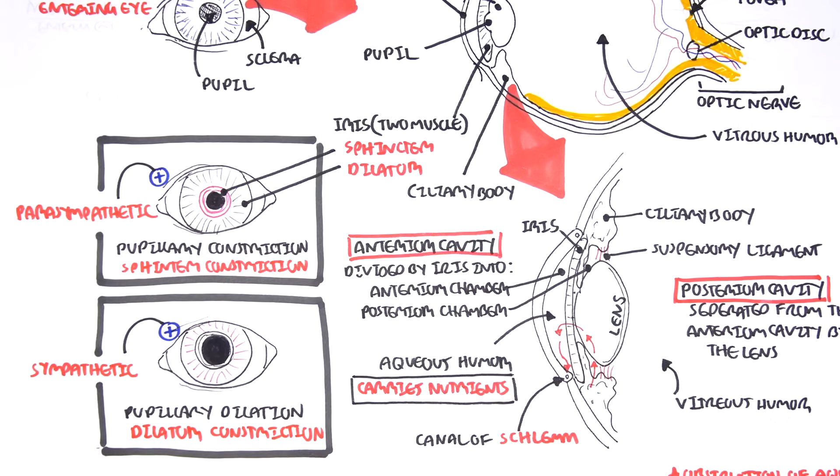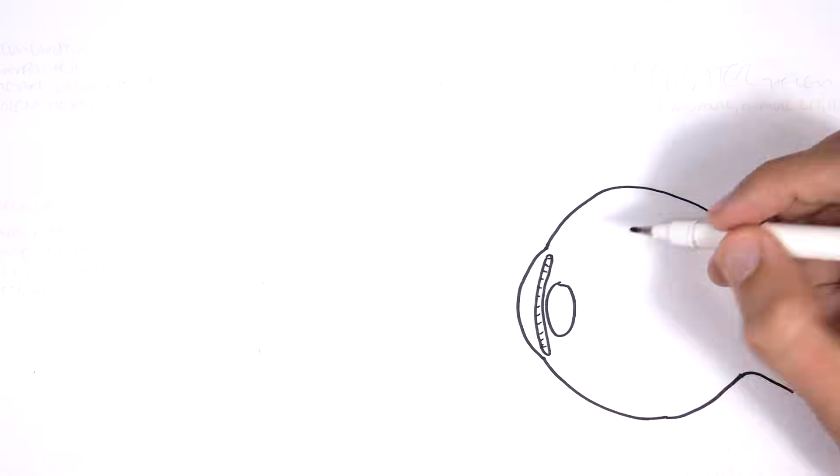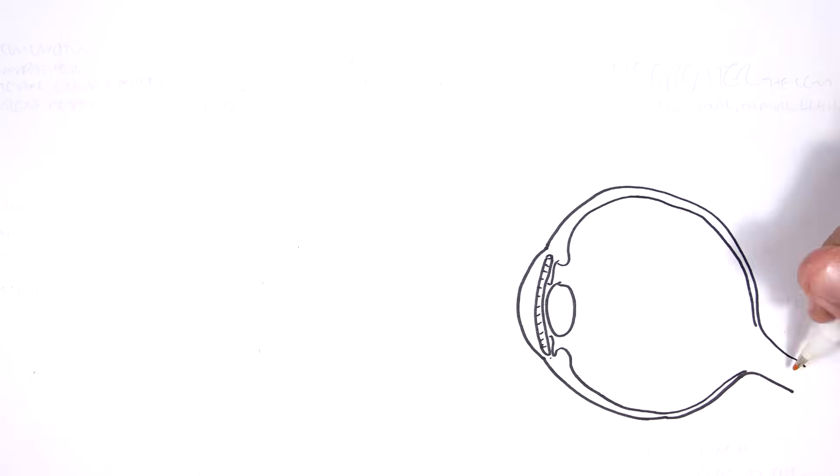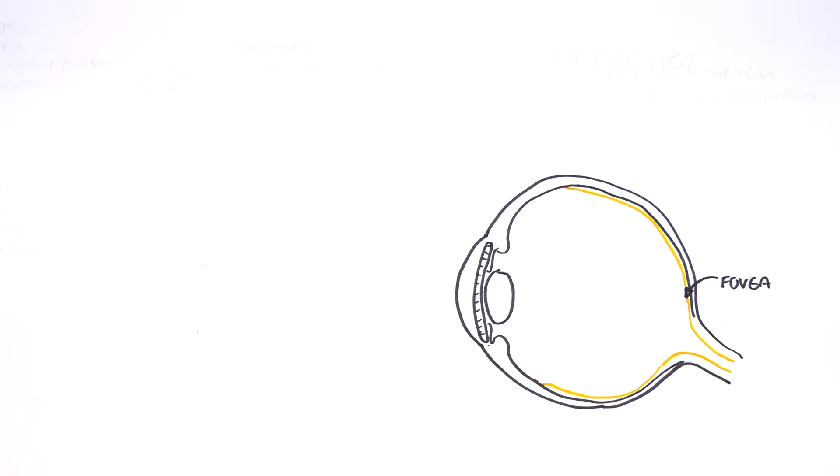Next topic: we will look at accommodation, the lens and ciliary bodies. We have a cross section of an eyeball. The fovea here contains a lot of cones, the photoreceptors, a particular type of photoreceptor.